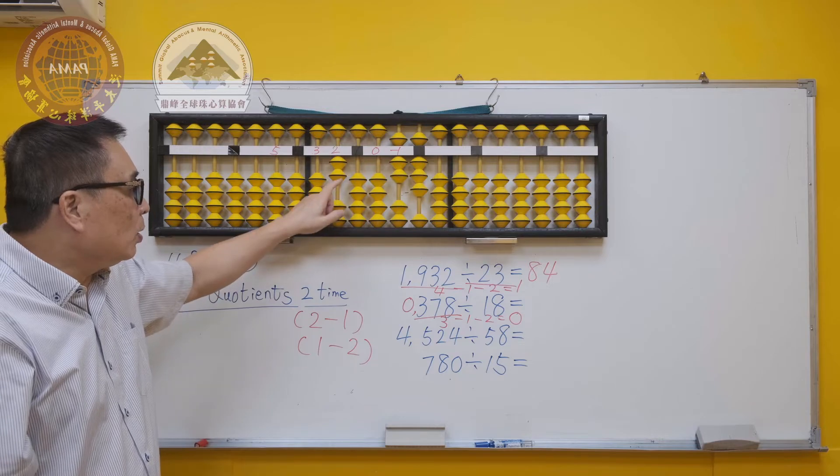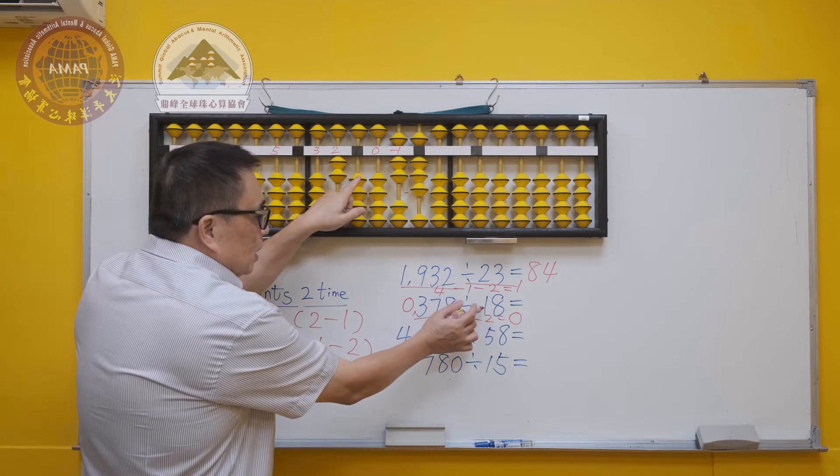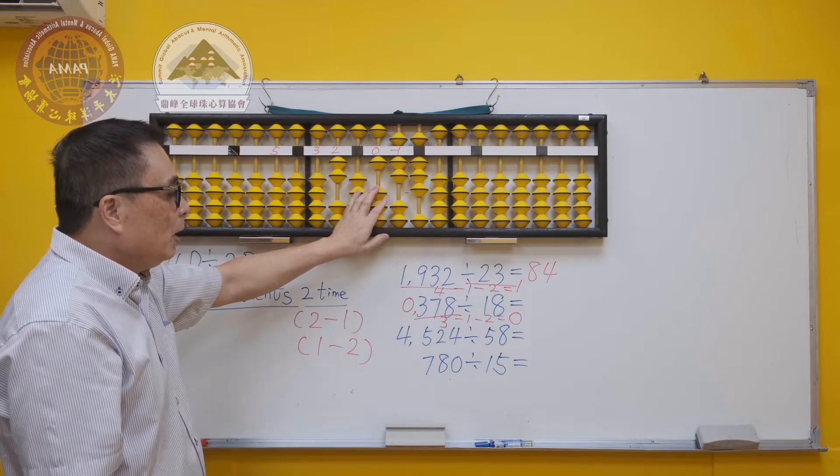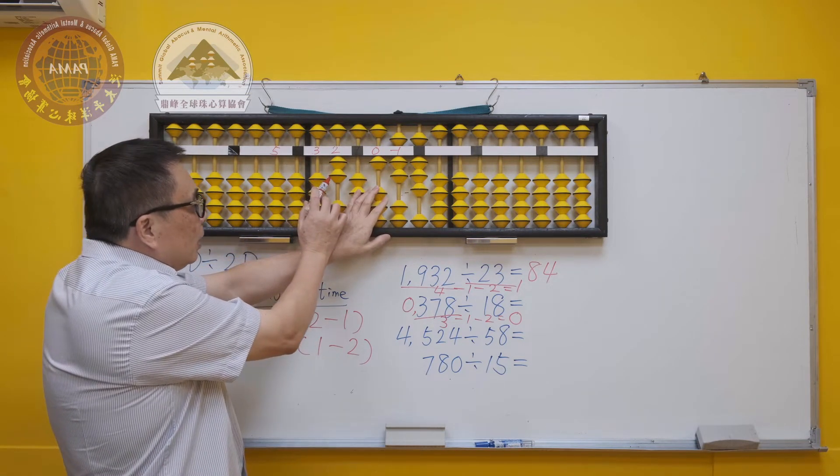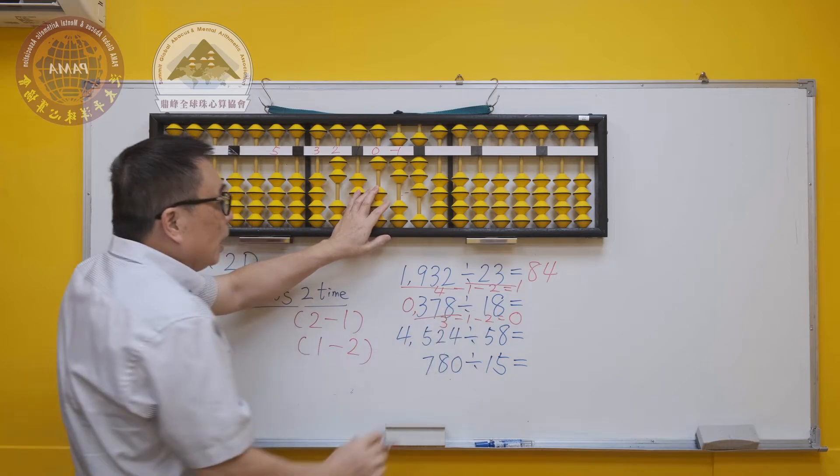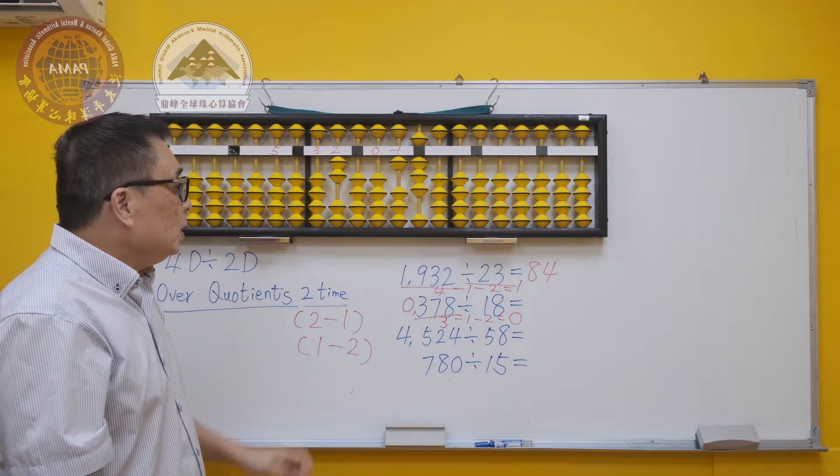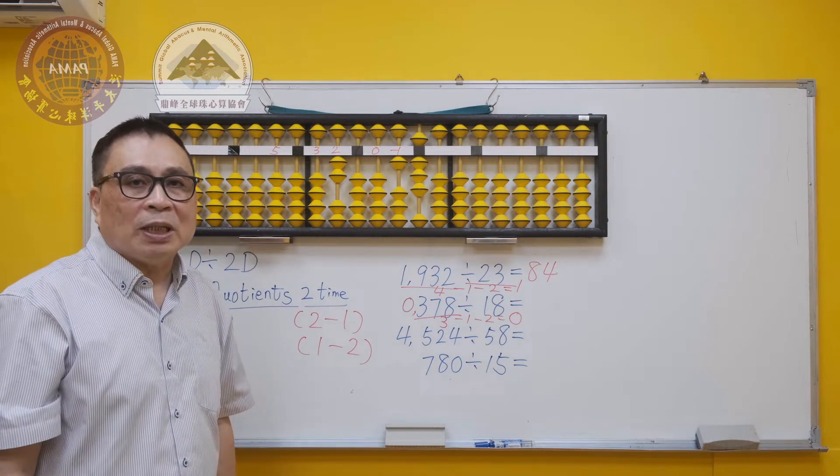We minus one time, skip one rod, and return the first digit of the divisor. Now we will use the new answer 2 to times 8, which is 16. Therefore, the first correct quotient is 2.